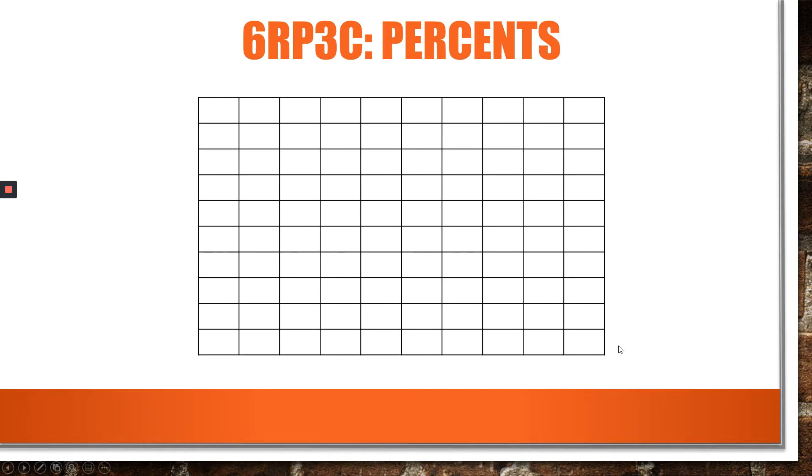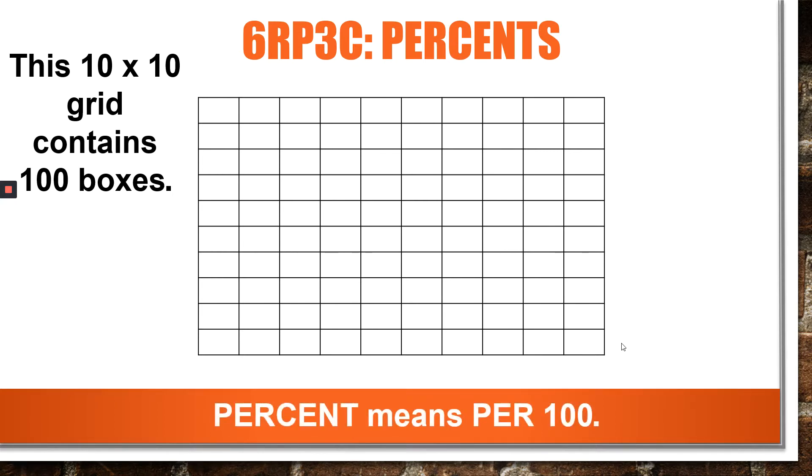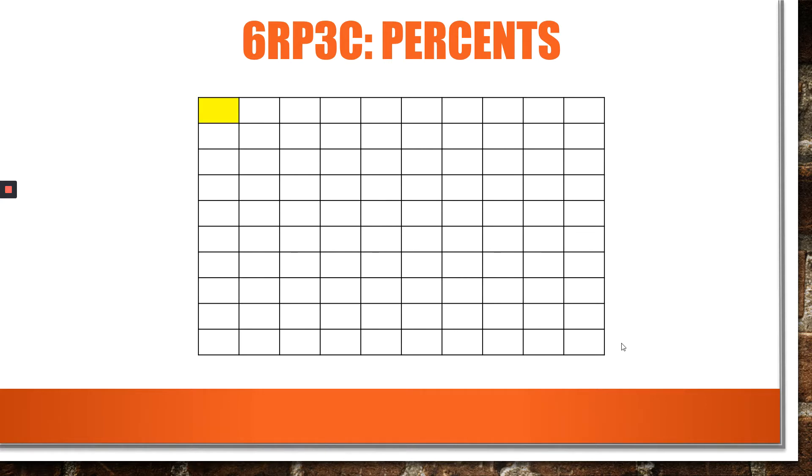First thing we're going to talk about is what does a percent mean? We have here a 10 by 10 grid containing 100 boxes. It's a very good visual for what percent means, because percent means per hundred. If I shade one little yellow box, I've shaded one out of a hundred, so I have shaded one percent, one per hundred.